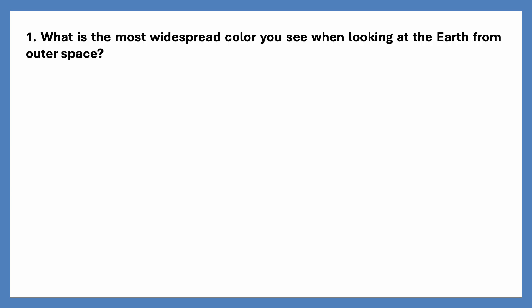What is the most widespread color you see when looking at the earth from outer space? Options are green, blue, brown, white. The correct answer is blue. Blue is the most common color you see when looking at the earth from outer space.